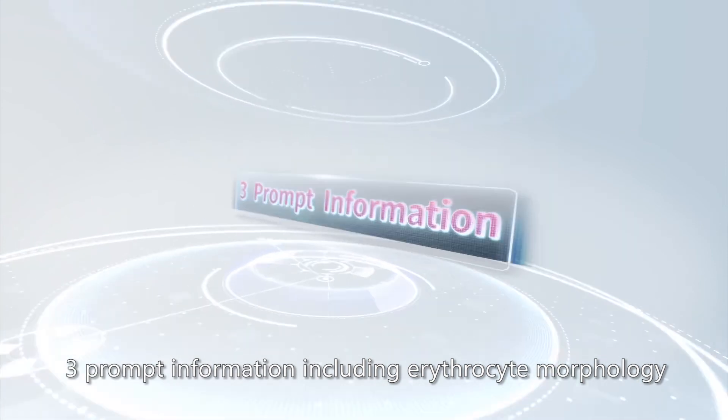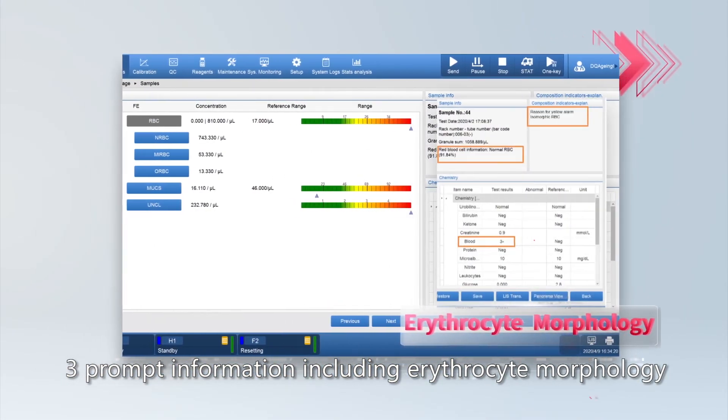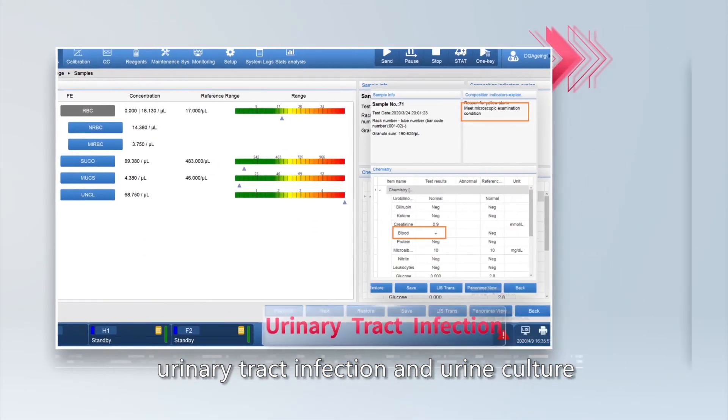3 prompt information items, including erythrocyte morphology, urinary tract infection, and urine culture.